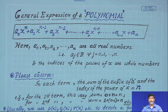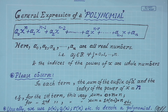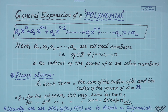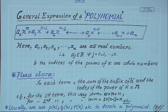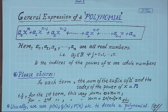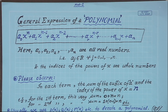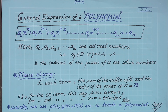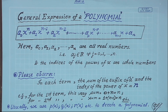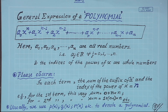Just look at the screen. The general expression for a polynomial is a₀xⁿ plus a₁xⁿ⁻¹ and so on up to the last constant term aₙ. In 7x we have a constant factor and a variable factor. Here for the first term, a₀ is the constant and xⁿ is the variable. For the next term, the power is reduced by 1. The power index of x reduces term by term. The coefficients a₀, a₁, a₂, ... up to aₙ are all real numbers, and the indices of the powers of x are whole numbers.